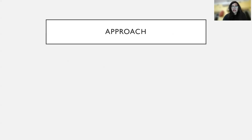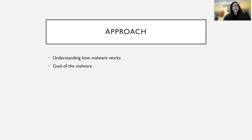What is our approach while performing malware analysis? First, understanding how malware works - whenever we analyze a malware, we try to understand how it's working, what kind of calls it's making, what functions it has used, what connections it's trying to make. We also try to understand the goal of the malware: is it there to encrypt your files like ransomware, or affect your boot sector, or disrupt your services? The goal could be anything, so it's very important for us to understand what kind of malware it is.